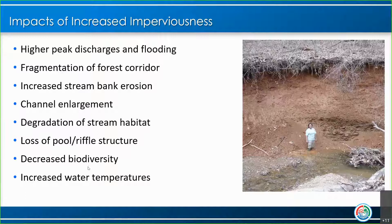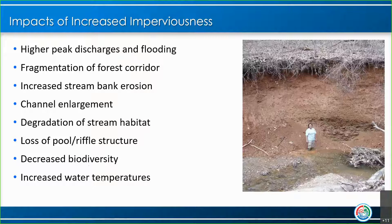We also see increased water temperatures. Think of a big mall parking lot in the middle of summer — it's super hot — and then we get one of our DC-area rainstorms that happens in 15 minutes, a lot of water all at once. It hits that parking lot, the water gets super hot, quickly runs off into our streams, and now you have a lot of warm water being washed into the streams.